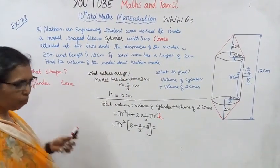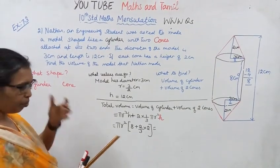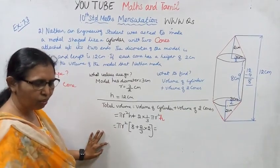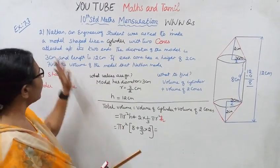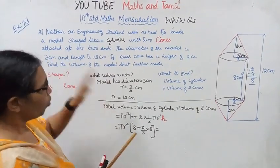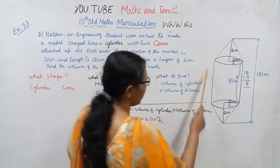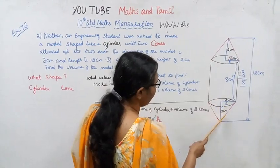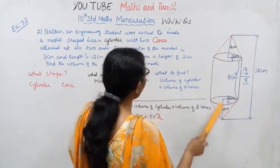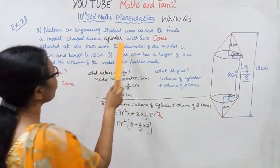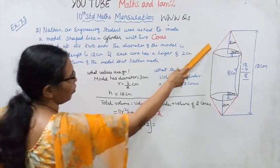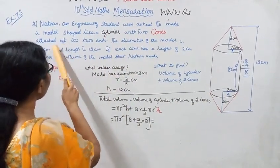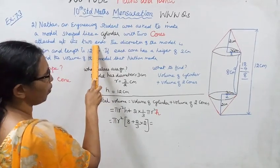The model consists of one cylinder with two cones — one on top and one at the bottom — attached as its two ends.